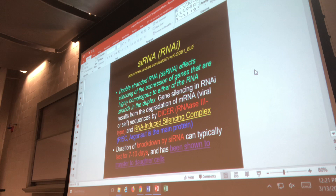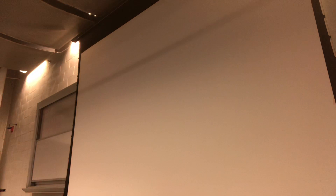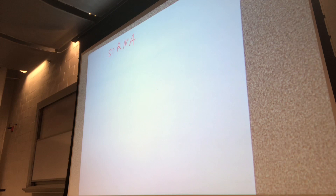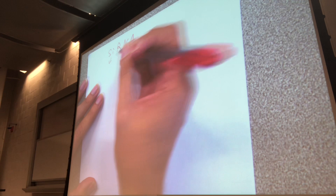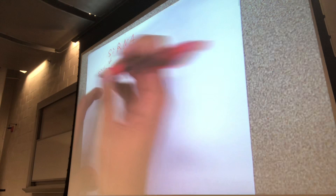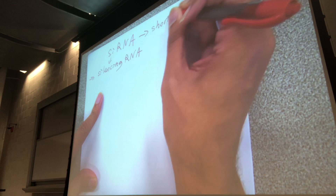Now we get to some pretty cool stuff that is more about what is currently happening in science. The first topic is siRNA. I'll draw a simplified version and then we'll go back to the diagrams in the notes. siRNA has two general names: it's commonly called silencing RNA, which gives a hint about what it does, but the actual name is short interfering RNA.